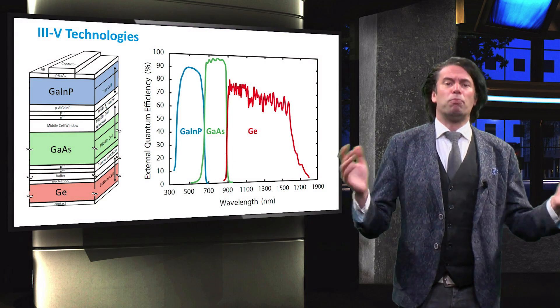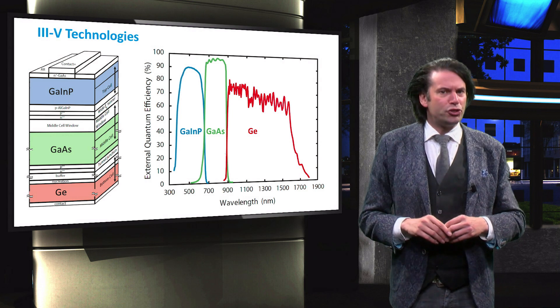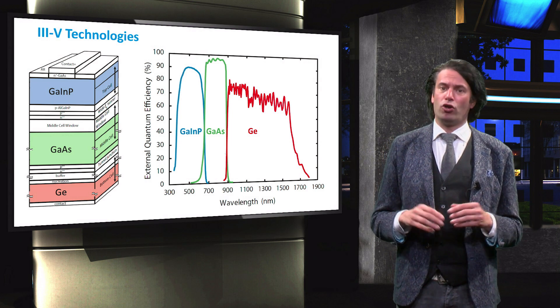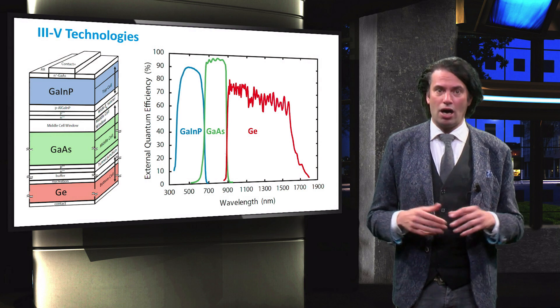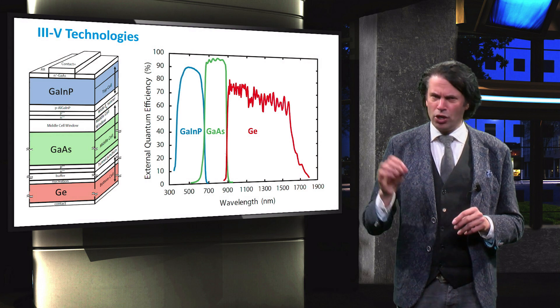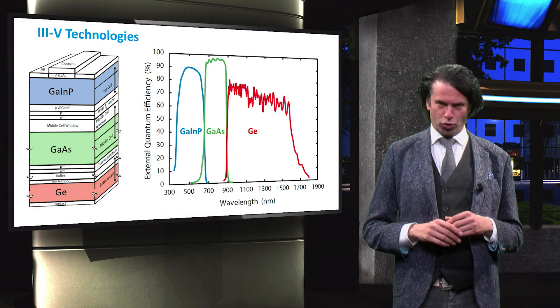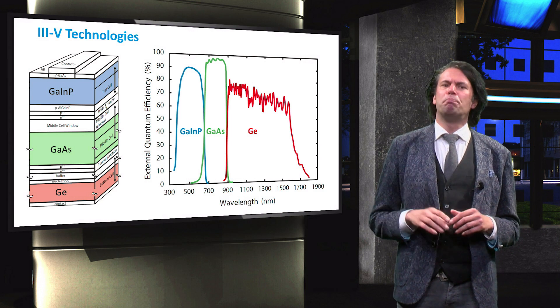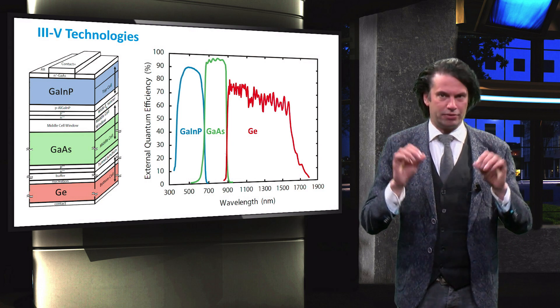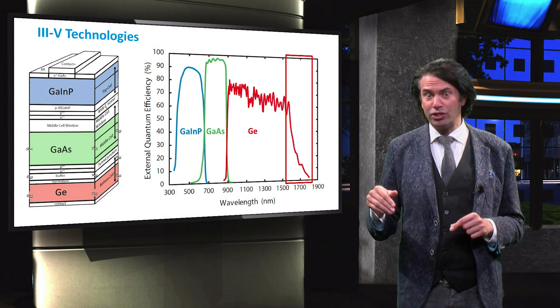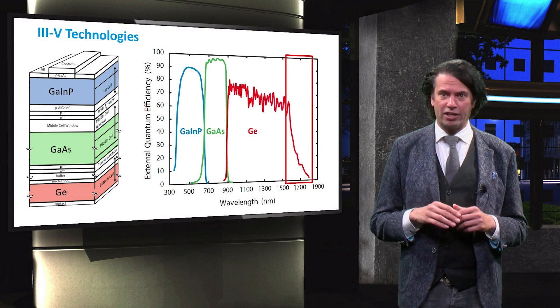Therefore, the more the EQEs of the individual cells overlap, the larger the thermalization losses will be. The block shapes of this III-V multi-junction device are possible because the III-V alloys used all have a direct band gap, which results in very sharp band gap edges and high absorption coefficients. Only the germanium bottom cell has an indirect band gap, which results in the slope in the long wavelength region.